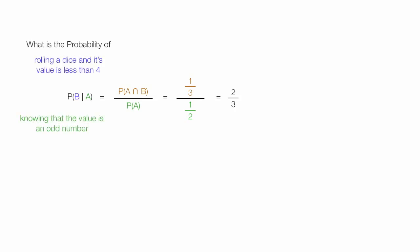What this says is: if I know that the value is an odd number, 2 out of 3 times the dice is going to be less than 4. I'm going to change the problem slightly and repeat the process of how I solve it.